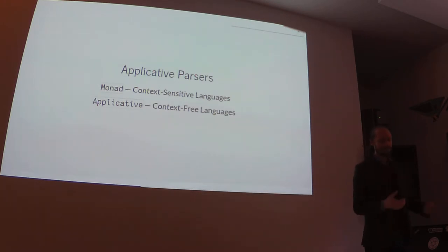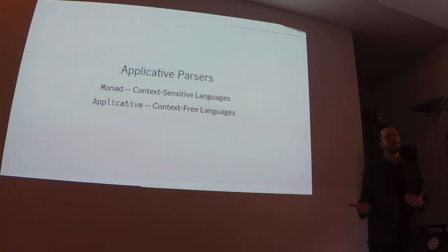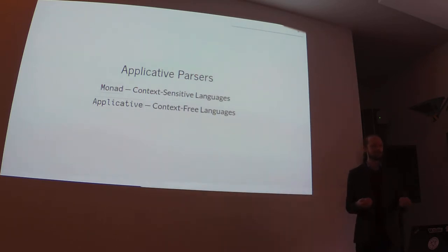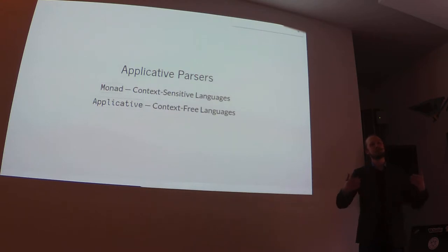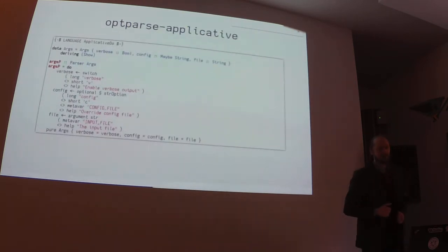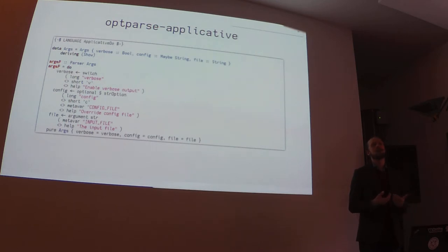An applicative parser is what you need most of the time. Most parser-combinator libraries like Parsec, Attoparsec, and Trifecta are monadic parsers, but for most cases that's overkill. On the other hand, you can leverage the applicative structure of the parser to gain insights on the language that you wouldn't get with a monadic parser. One example is the optparse-applicative library, a command-line option parser.